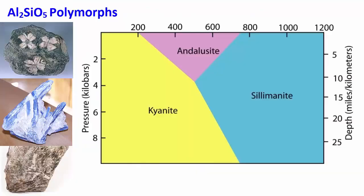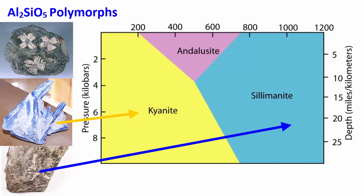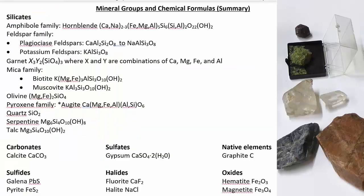Another set of polymorphs that are used commonly to identify metamorphic settings is Al2SiO5. At high pressures and low temperatures, this mineral is kyanite. At high pressures and high temperatures, the atoms have a different crystalline structure and the mineral is sillimanite. At lower pressures, low to moderate temperatures, again, a different crystal structure and the mineral is andalusite. All three of these minerals have the same chemical formula, but different crystal structures.